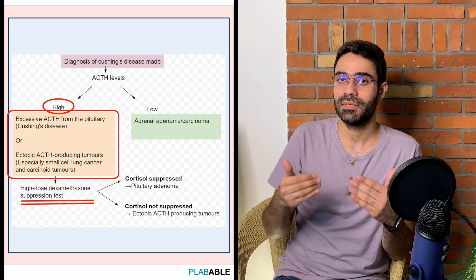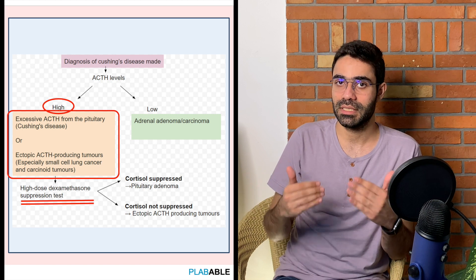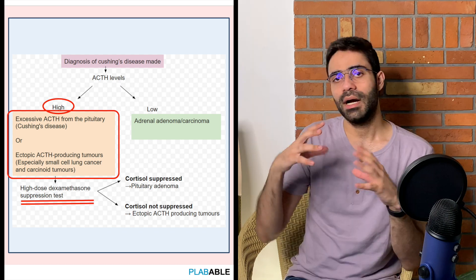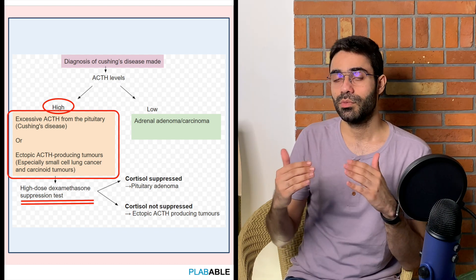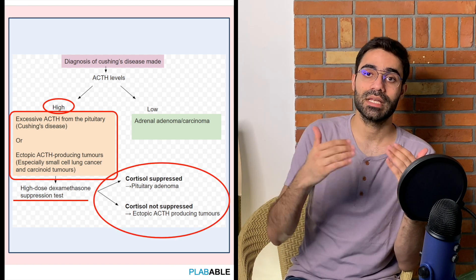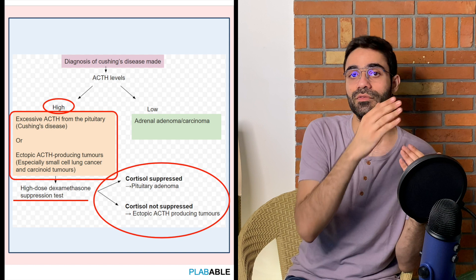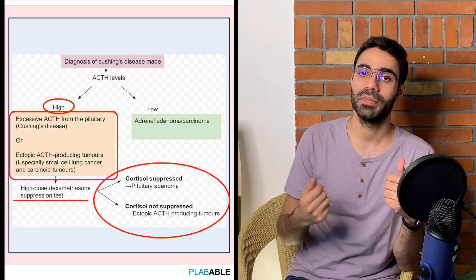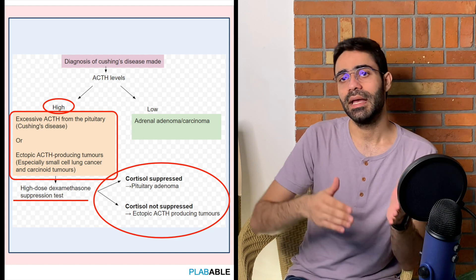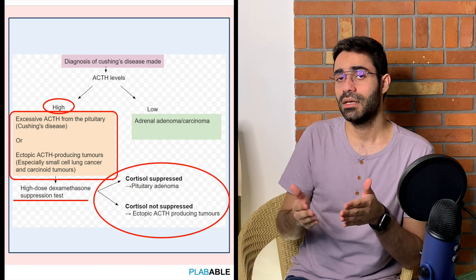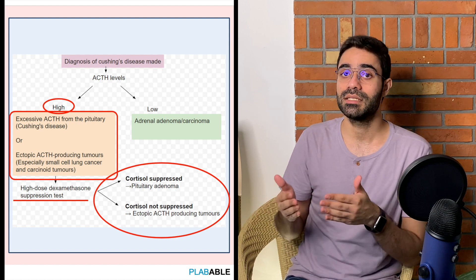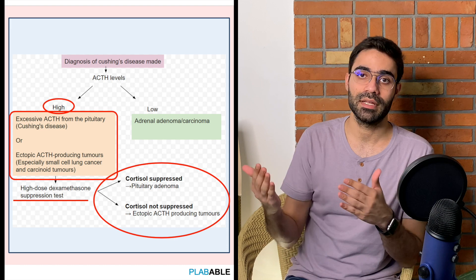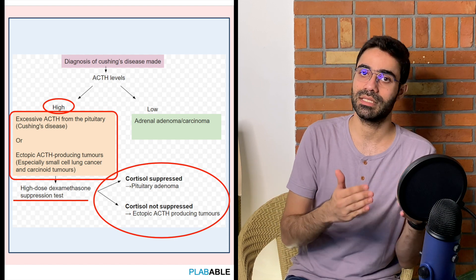The high dose dexamethasone suppression test helps us localize the cause. High dose dexamethasone will successfully suppress elevated ACTH levels from a pituitary source by suppressing the hypothalamic pituitary adrenal axis, in contrast to an ectopic source on which it has no effect — ACTH levels remain elevated despite giving the high dose dexamethasone.